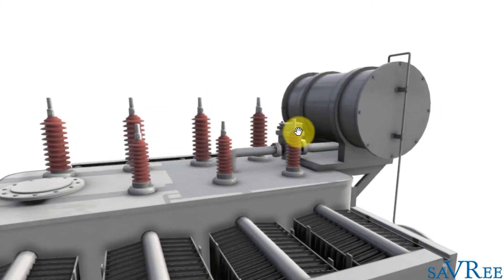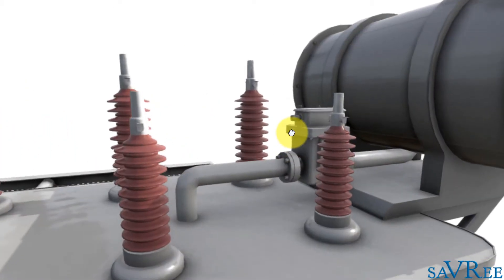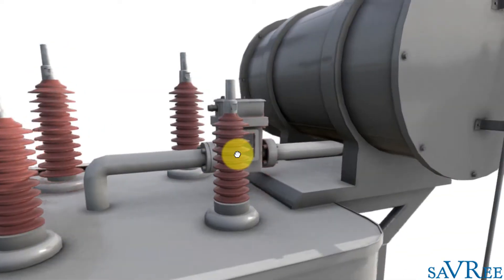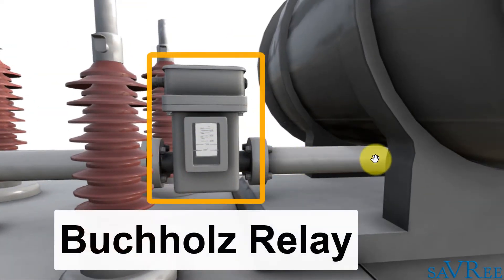We can see that the Buchholz relay is mounted between the main tank. The pipe comes out here and goes to the Buchholz relay and then to the conservator tank. So it's mounted between the main tank and the conservator tank.